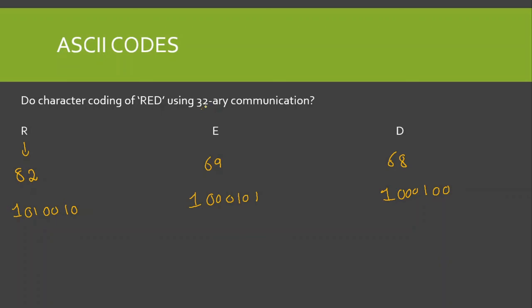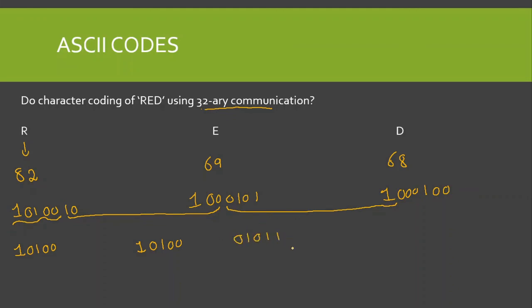Now I need to use 32-ary communication which has a maximum of 5 bits, so I group all the binary bits into groups of 5. The first group is 10100. Then the next two bits from R and the first three bits from E form the second group: 10100. The third group takes the remaining bits: 01011. And the fourth group is 00010. There is one bit remaining so I pad with zeros to make it 5 bits: 00000.